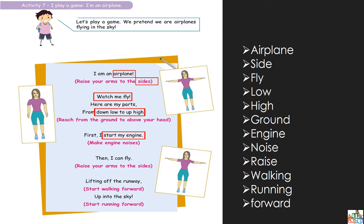Let's continue — read together with me: then I can fly. Quand vous allez commencer le moteur, ensuite vous pouvez voler. You will be able to fly — so you will raise your arms to the side. Vous allez jouer avec your arms — you're going to move it and make the noise of the engines.